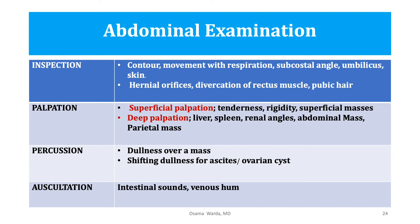If the mass becomes more evident when the patient raises her head it is a parietal mass; if it becomes less prominent or disappears it is an intra-abdominal mass. Percussion of the abdomen is performed for dullness over a mass and shifting dullness for ascites. An ovarian cyst is negative for shifting dullness because it is a limited space in which fluid moves, so central dullness is always present. In ascites, shifting dullness is positive. Auscultation is used for intestinal sounds and venous hum if there are dilated veins around the umbilicus.